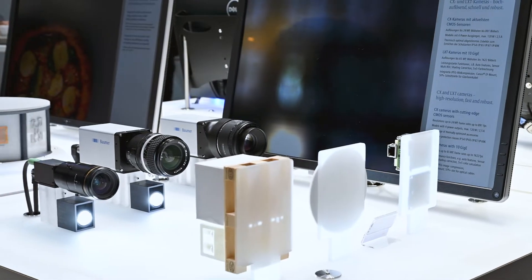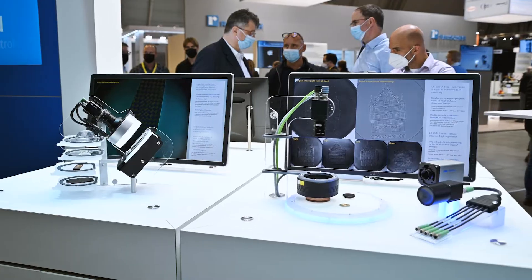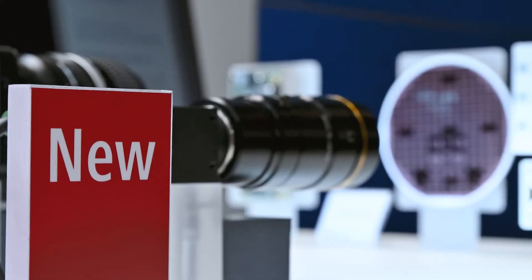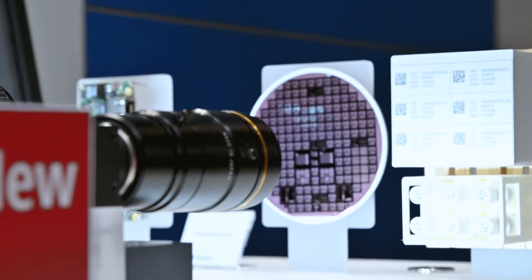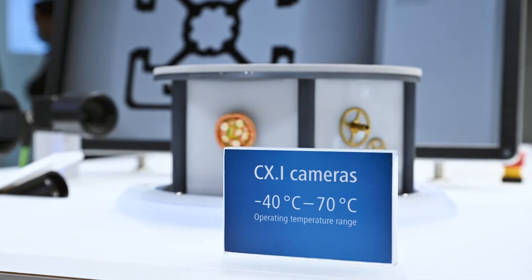With more than 130 models, the versatile CX series offers the right camera for every application. Whether with latest 4th generation Sony sensors, exposure times from 1 microsecond, operating temperature range from minus 40 to 70 degrees Celsius.